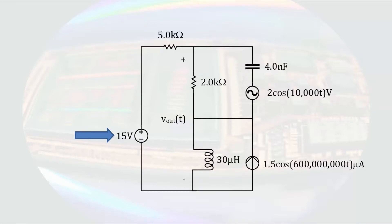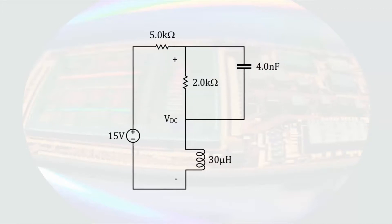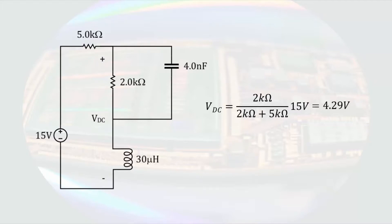To start with the easy one, we will analyze the contribution of the output voltage due to the 15 volt DC source. Turning off the voltage source on top replaces it with a wire, and turning off the current source on the bottom replaces it with an open circuit. With only a DC source present, the capacitor looks like an open circuit and the inductor looks like a wire. We can solve for the DC voltage by doing voltage division between the 2 kilohm and the 5 kilohm resistor, resulting in a voltage of 4.29 volts DC.